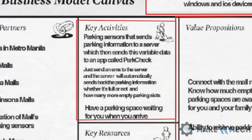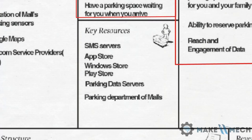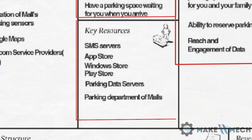Moving to key activities — what key activities do you have to perform? These should be relevant to the other sections of your BMC. The three main categories of key activities are production, problem-solving, and creating a platform or network. In this case we are creating a platform, so list down all the key activities you have to perform to solve the problem.